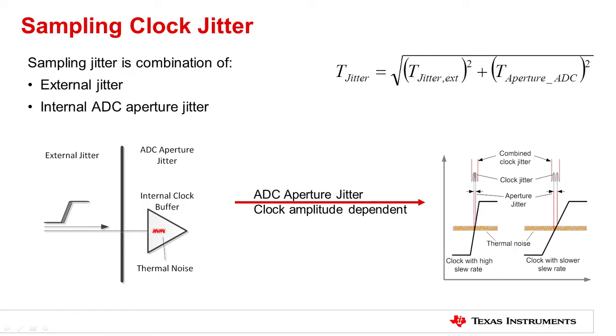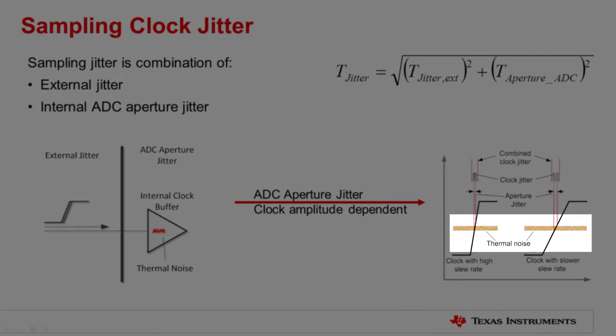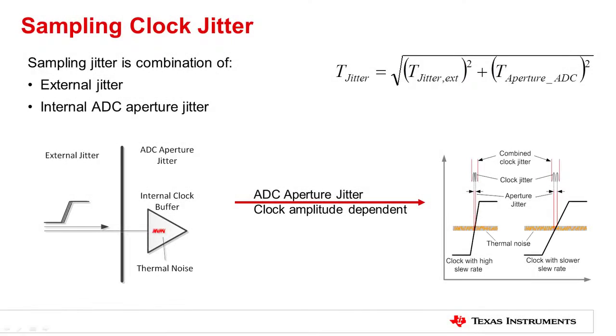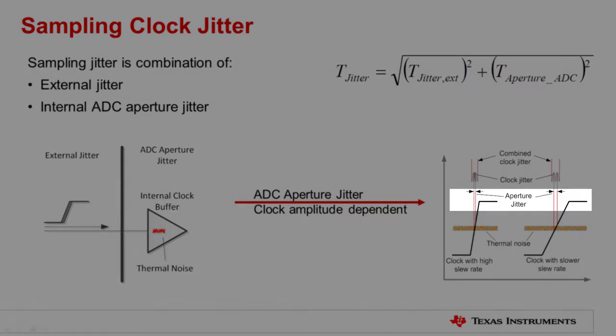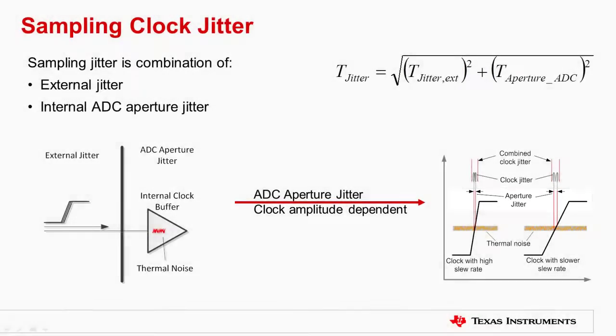The sampling clock jitter consists of two components: the external jitter from the non-ideal clock source and the internal ADC aperture jitter. The ADC aperture jitter originates primarily from the thermal noise of the internal clock buffers, and the aperture jitter is typically dependent on the clock signal amplitude provided to the ADC. Both the external jitter and the internal ADC aperture jitter need to be combined in order to determine the ADC SNR degradation.